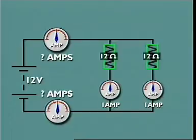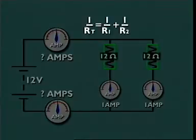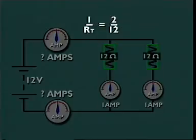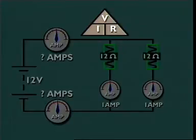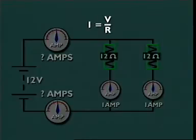Now if two resistors are removed, what is the result? One-twelfth plus one-twelfth is two-twelfths, which turned back the way it was is 12 over 2, or 6 ohms. Voltage across the components is still 12 volts, but by Ohm's law...